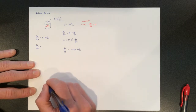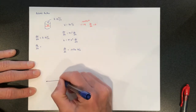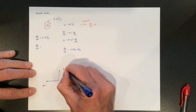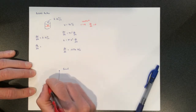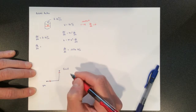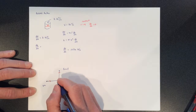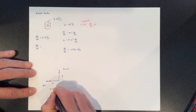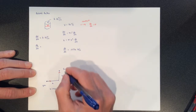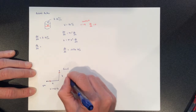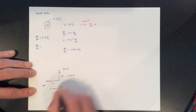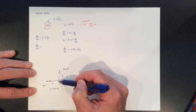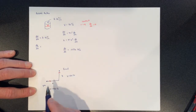Now let's do a Pythagorean theorem one. In gym class you're playing line tag — you're sitting here and your friend is up there. You run along the horizontal line and he runs away from you along the vertical line. At the moment we're interested in, x = 40 feet (your distance from the vertical line) and y = 30 feet (your friend's distance above the horizontal).